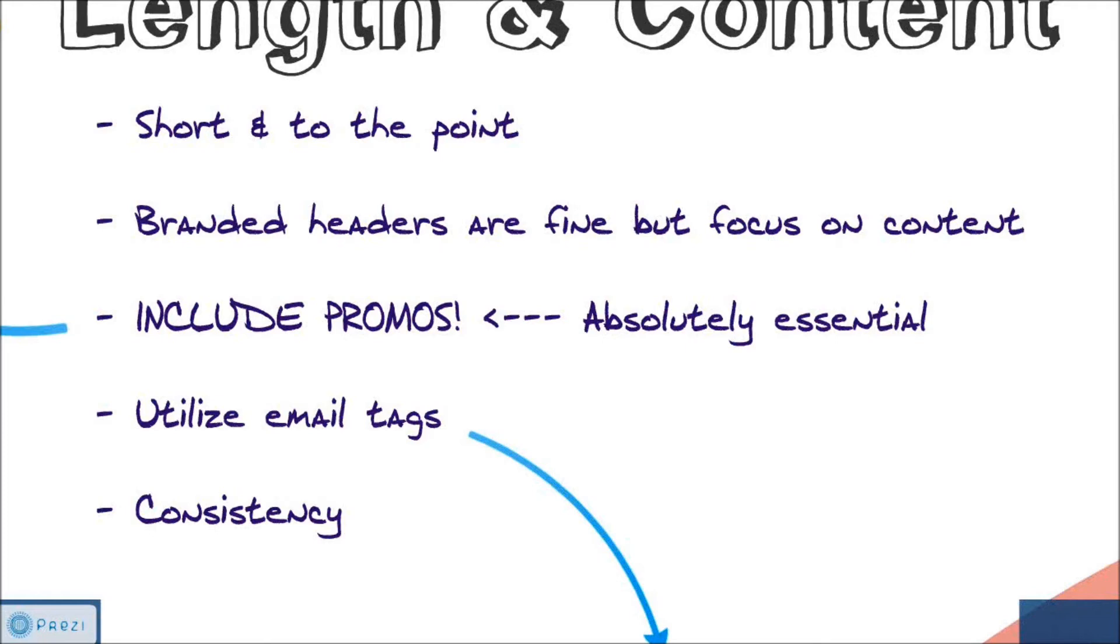Now lastly, we want to look at consistency. You want to make sure that you're sending these emails out in a consistent and rather predictable manner. You don't want to be all across the board, be absent for two months, and then all of a sudden send out three emails in one week. As sales are coming through and as new promotions are coming through, you want to be consistently updating your affiliates. Make sure that you're consistent with your emails.